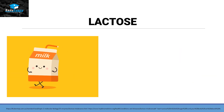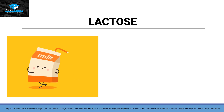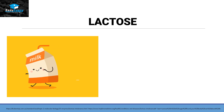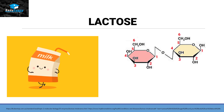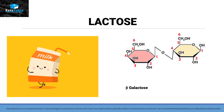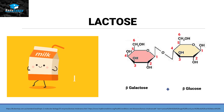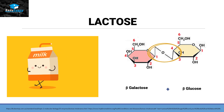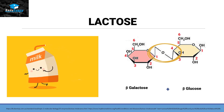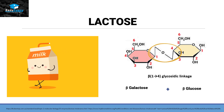The next disaccharide is lactose. Lactose is usually present inside milk. If we look at the structure of lactose, it is made up of one beta-galactose and one beta-glucose. The bond that these two monosaccharides form with each other is called a beta-1,4 glycosidic linkage.